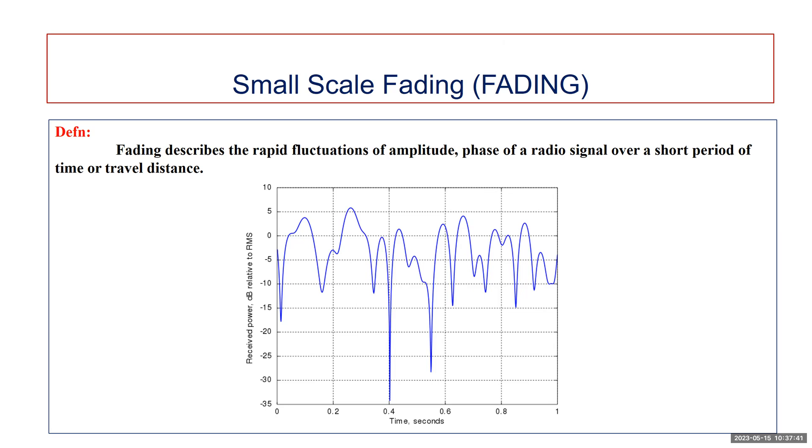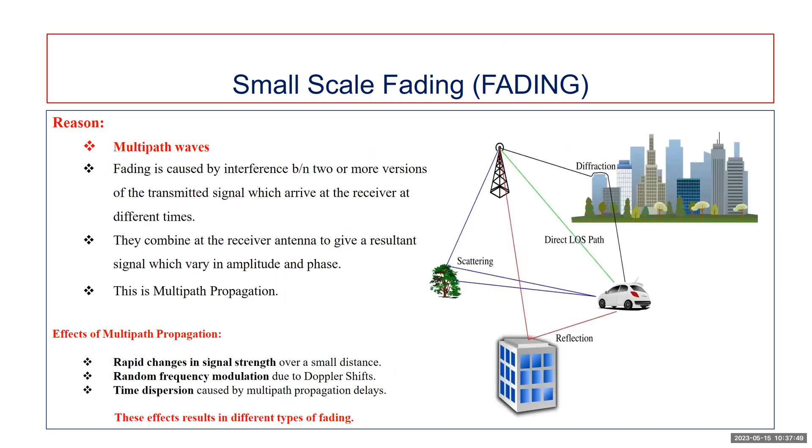The diagram shows fluctuations over short duration. The waves arriving in multiple versions are called multipath waves. These multipath waves combine at the receiver antenna to give a resultant signal which varies in amplitude as well as phase, depending on the distribution of intensity and relative propagation time. Based on amplitude and time of arrival of the multipath waves, your fading will be different.